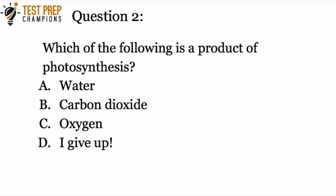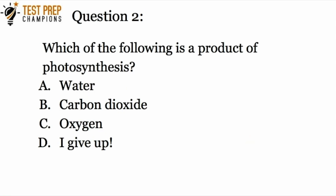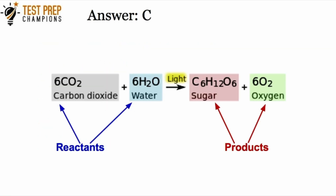Question two: which of the following is a product of photosynthesis? The options are water, carbon dioxide, oxygen, or give up. The answer is C — oxygen. Looking at the equation, oxygen is one of our products, along with sugar, also known as glucose or carbohydrates.